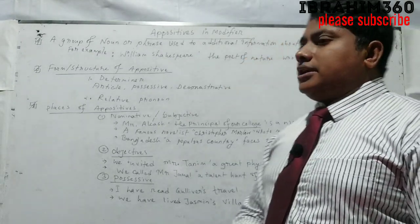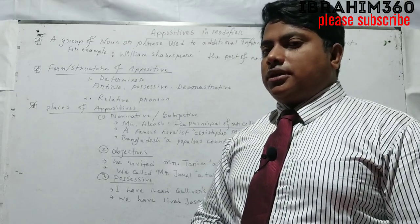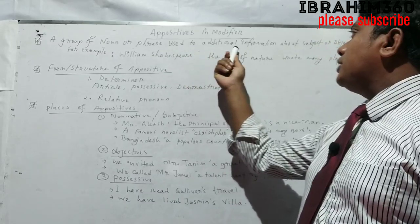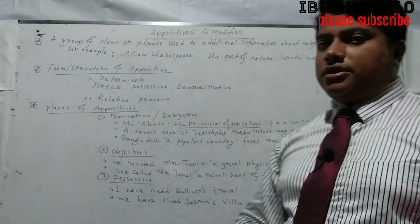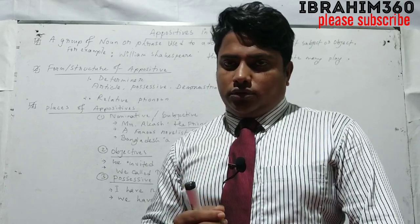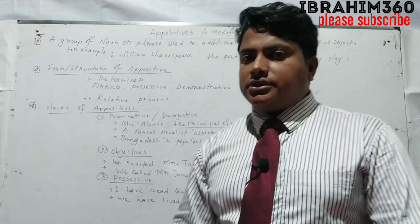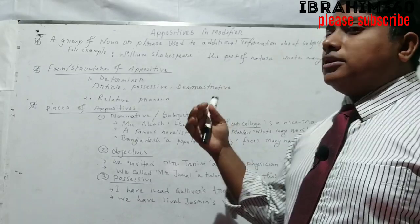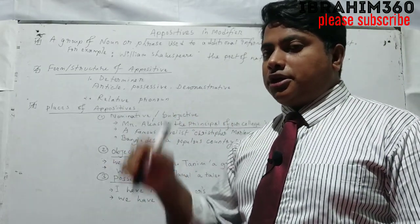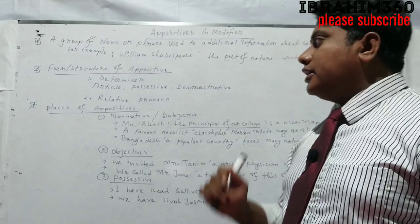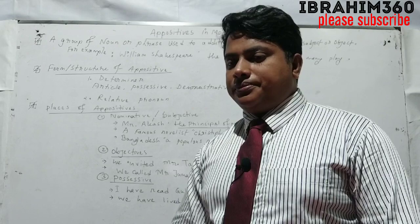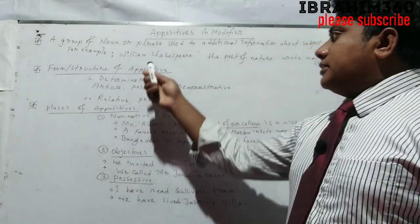I am going to generally explain apposition. An appositive is a group of nouns or phrases used to give additional information about a subject or object. For example: